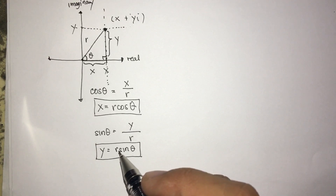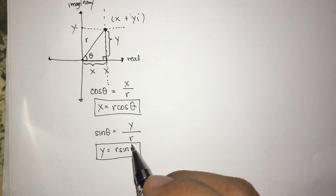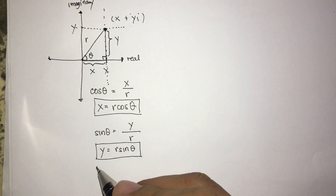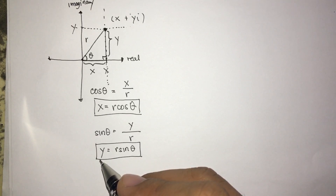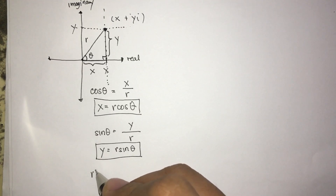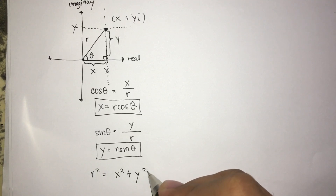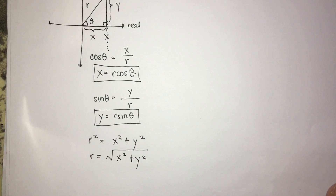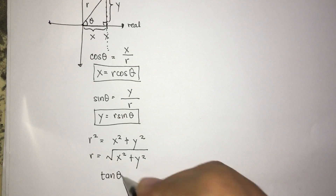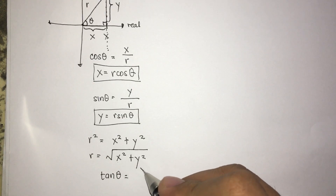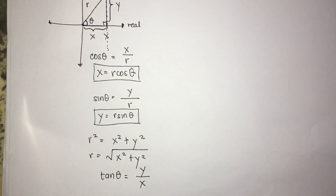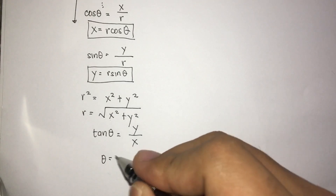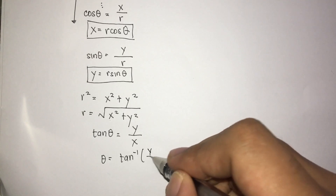If we want to solve for r in terms of x and y, we know that by the Pythagorean theorem the square of the hypotenuse equals the sum of the squares of the legs. So r squared equals x squared plus y squared, and solving for r we have r equals the square root of x squared plus y squared. And if we want to solve for theta, we can use the tangent function: theta equals arctan of y over x.